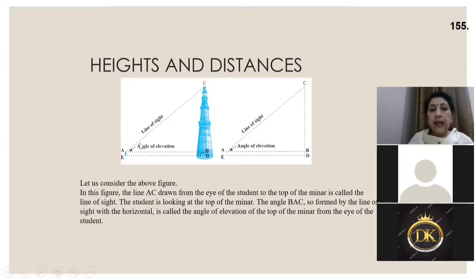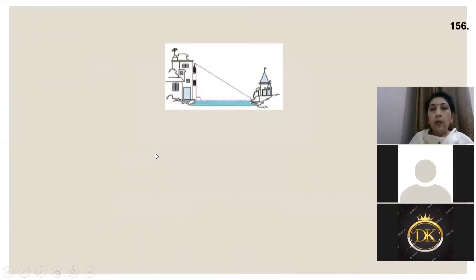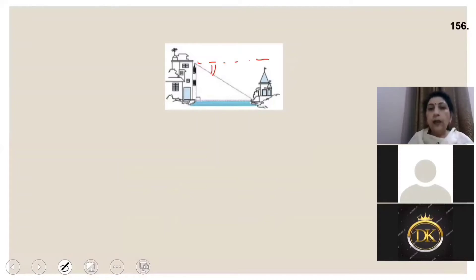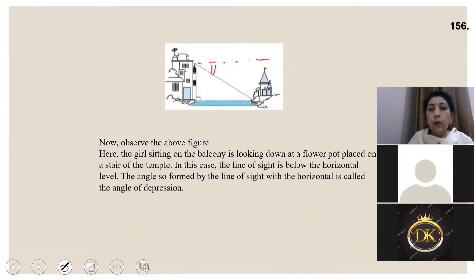When you're looking up, the angle between the horizontal and the line of sight is called the angle of elevation. When you're looking down, the angle formed between the horizontal line and the line of sight is the angle of depression. These are two important terms — angle of depression and angle of elevation.